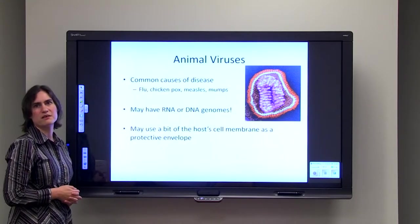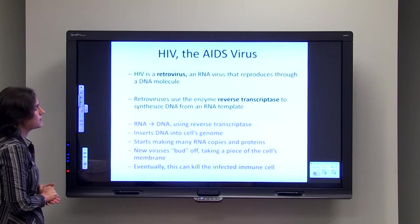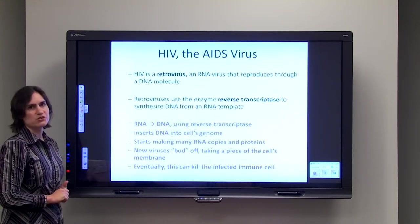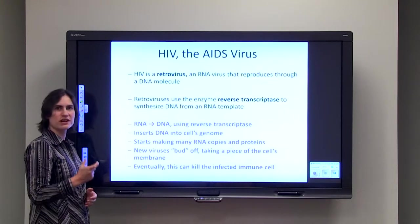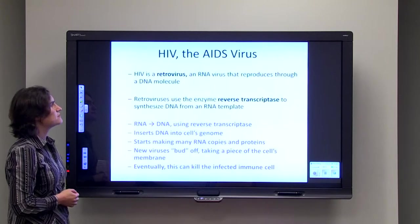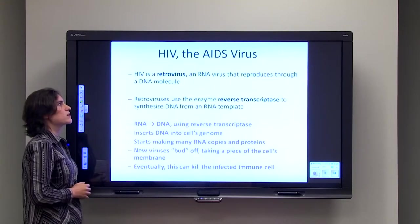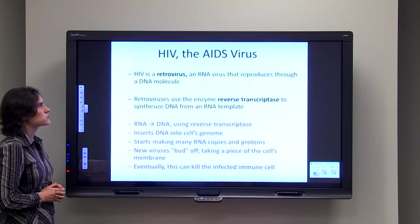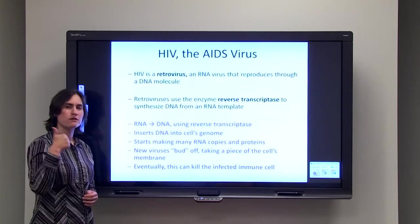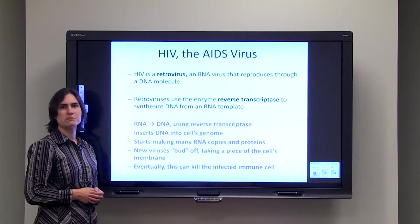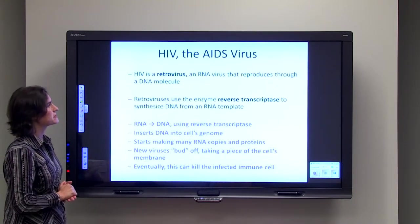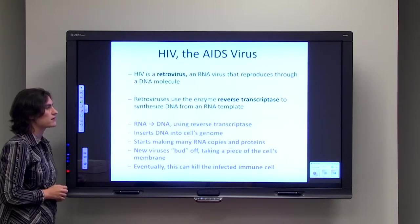One very well-known virus that can infect humans is HIV, the AIDS virus. HIV is a retrovirus, and what that means is that it starts off with an RNA genome and then it makes DNA from that RNA genome. This does not happen anywhere else in nature except with these retroviruses. The way that these retroviruses work is they use an enzyme called reverse transcriptase. Normally when we do transcription, we start off with DNA and we make RNA, but with reverse transcriptase we're going backwards—we're going from RNA to DNA, or synthesizing DNA from an RNA template.